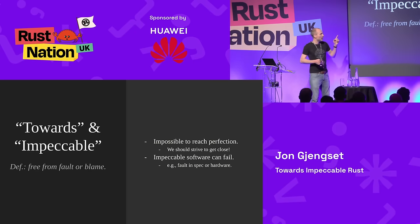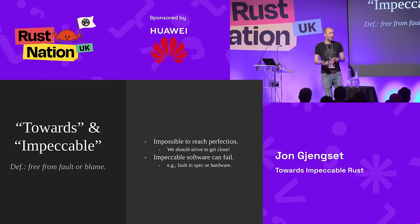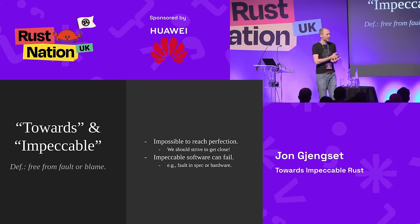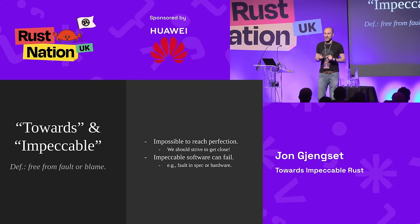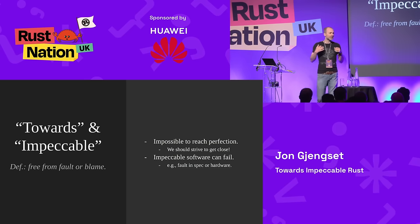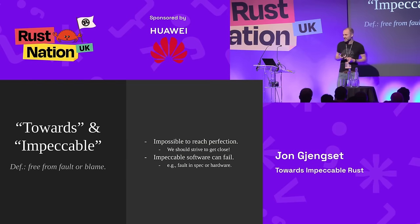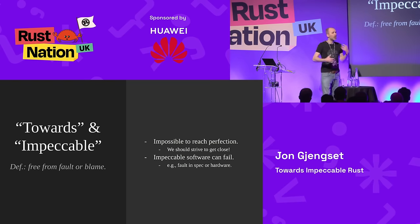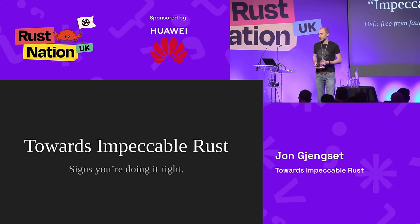When I say "impeccable," I don't mean that impeccable software can't fail. There are all sorts of reasons why software might fail — operator errors, hardware errors, failures in the spec. What I want to use here is impeccable in the definition of free from fault or blame. So it is not the software's fault. Impeccable means the software is dependable, misuse resistant, ergonomic, and fast enough. In this talk I'm going to walk you through some of the ways you can use Rust to achieve that.